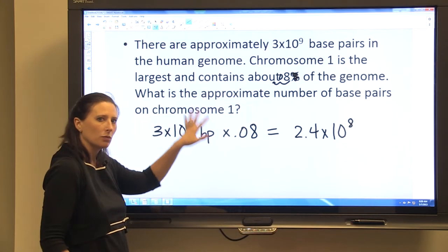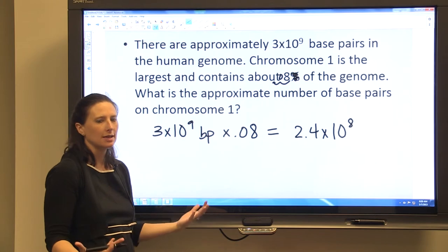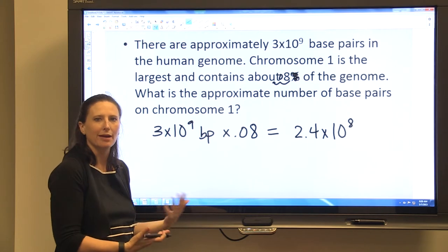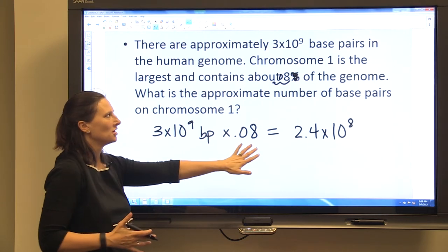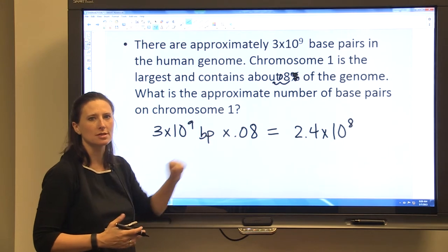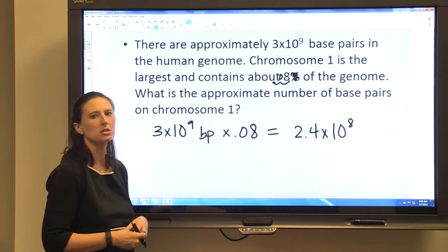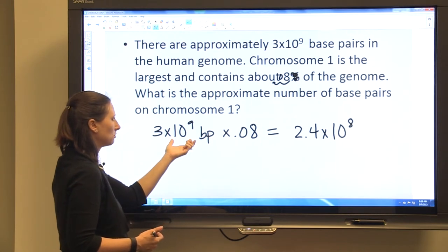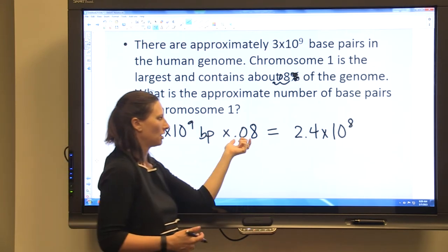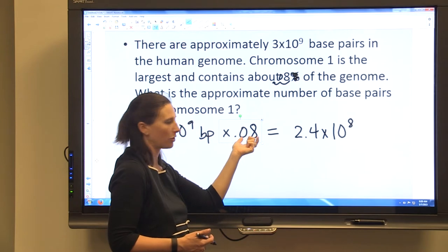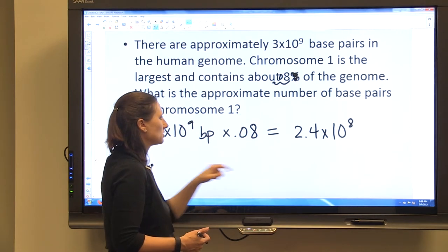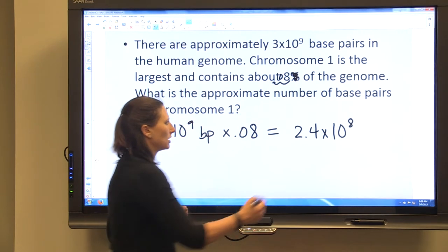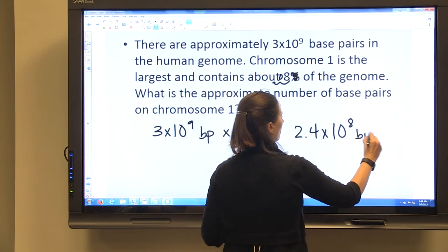So don't let it worry you when you start seeing things like base pairs and really large numbers. You're still going to approach this the same way that you approached that last one. You can just multiply the percentage in the form of a decimal by your original number. And you can determine how many base pairs on chromosome 1.